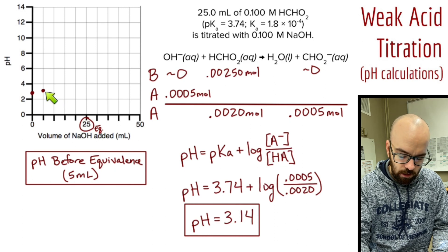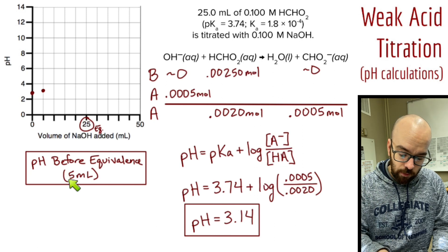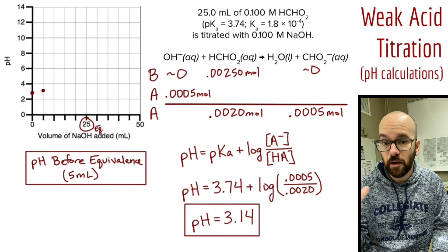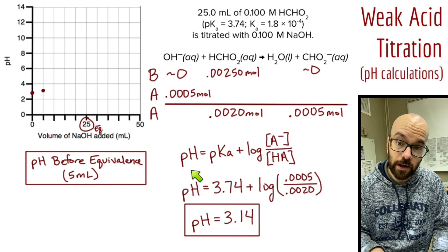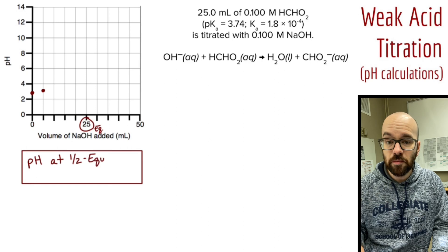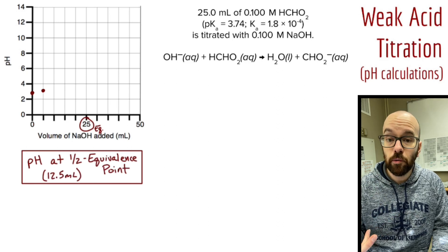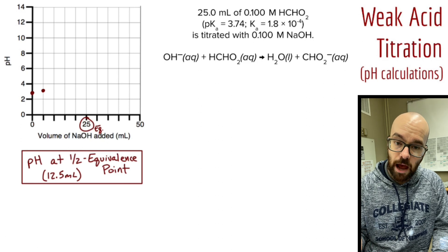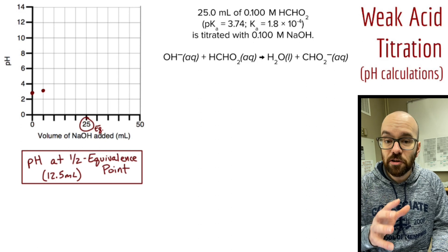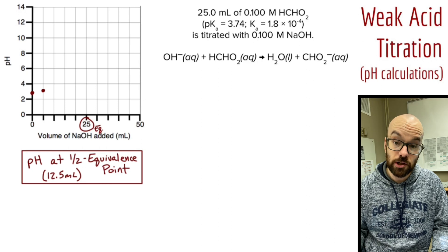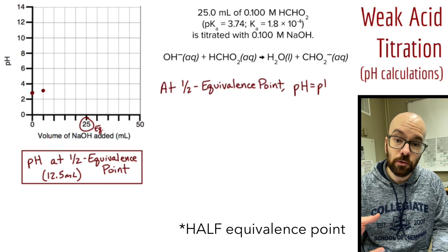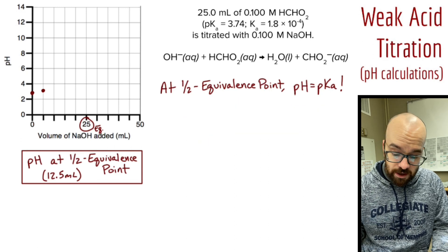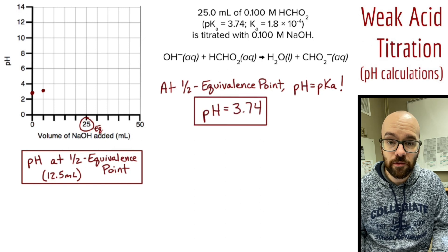To recap: before the equivalence point, do a before-add-after table to get moles of acid and conjugate base remaining, then use Henderson-Hasselbalch to get the pH. Now let's find the half equivalence point. The equivalence point was 25 milliliters, so the half equivalence point is 12.5 milliliters. This is the easiest calculation: at the half equivalence point, pH always equals pKa for a weak acid titration.